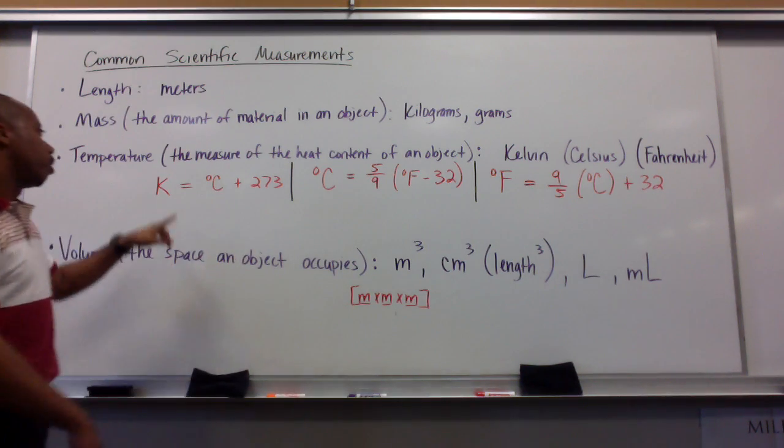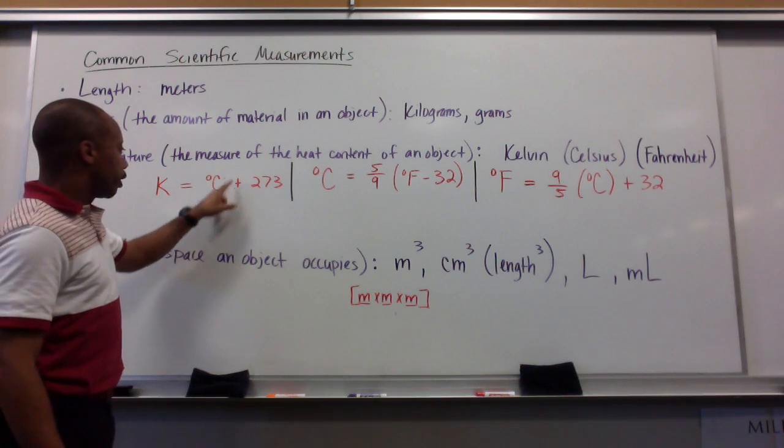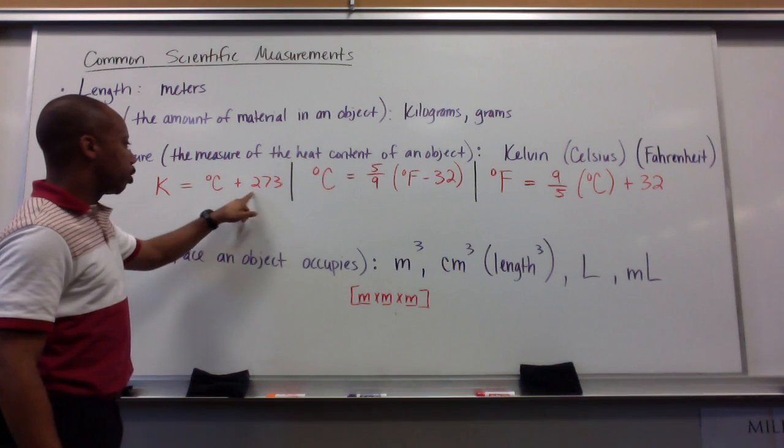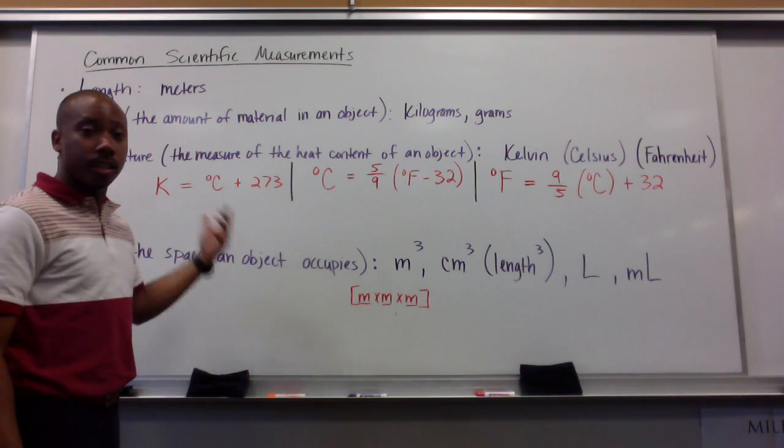This is how we do so. K stands for Kelvin. Kelvin is your temperature in degrees Celsius plus 273. This will give you your temperature in Kelvin. We'll do calculations with this later on. This is just an introduction.